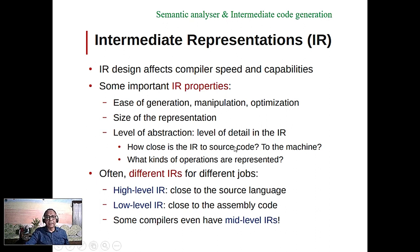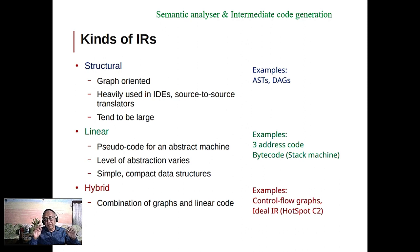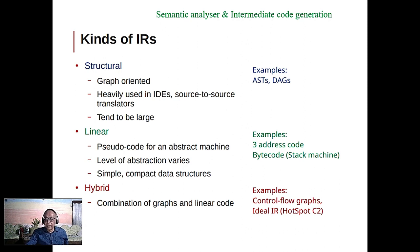Intermediate representations can be high level — closer to source language — or low level, at assembly language level. We have already covered abstract syntax tree. Another form is the directed acyclic graph, which avoids the same calculation being performed again and again. Postfix is a linearized representation, three address code is a traditional approach, and hybrid approaches depend on the language.